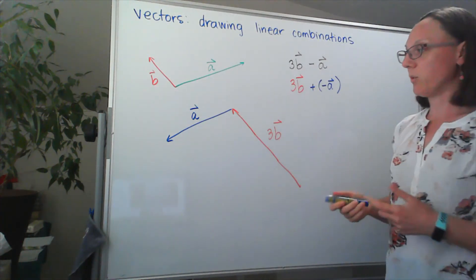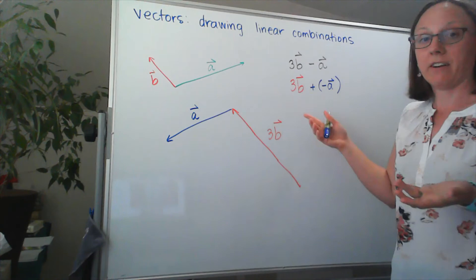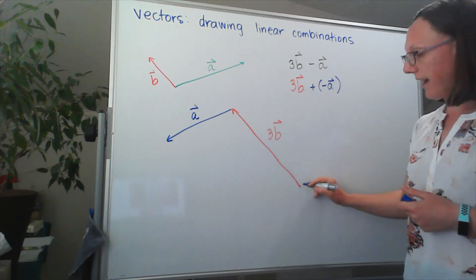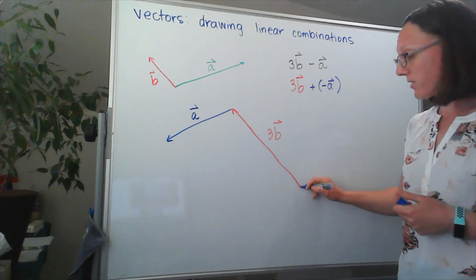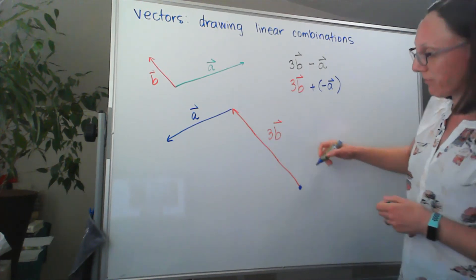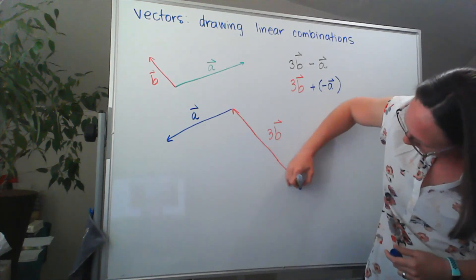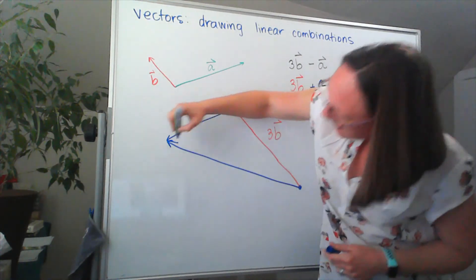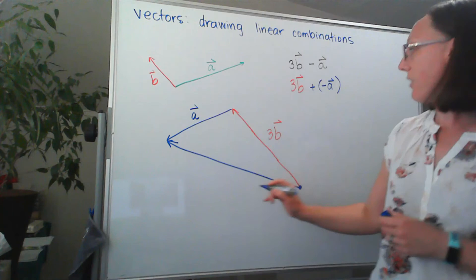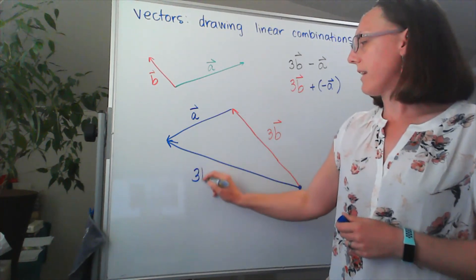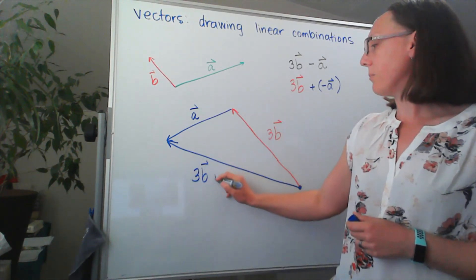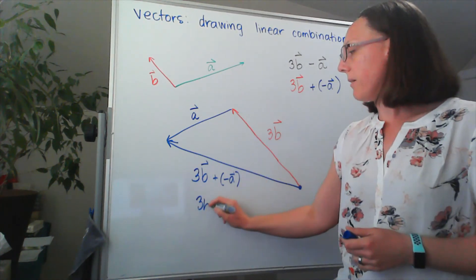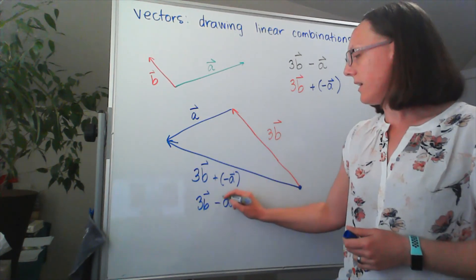And then I'm going to draw my final answer, the 3B plus negative A, starting at the tail of my first vector, pointed to the head of the end. So this resulting vector would be 3B plus negative A or 3B minus A.